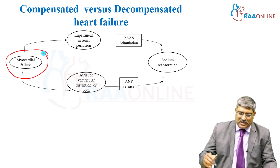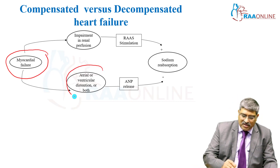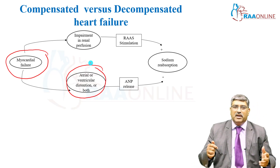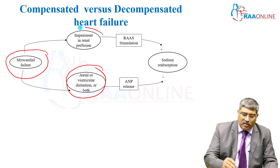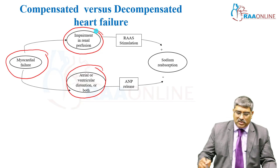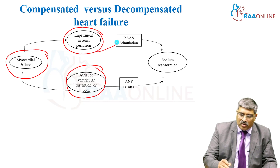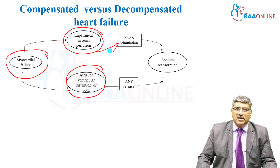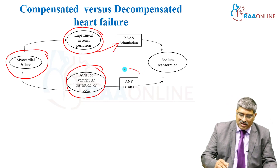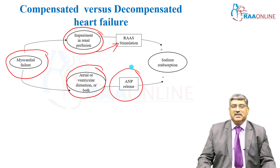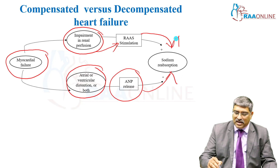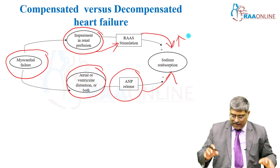Decompensation leads to two consequences. There can be chamber dilatation — atrial or ventricular distension — or reduced forward flow, leading to impaired renal perfusion. With low cardiac output and hypotension, the renin-angiotensin-aldosterone axis is activated. Due to distension, atrial natriuretic peptide is also released, which reduces sodium, while the renin-angiotensin system increases sodium.